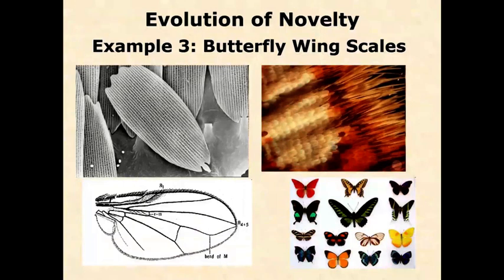Our next evolutionary novelty is going to look at butterfly wings. We've done quite a bit on arthropods. Arthropods and insects in particular are in some ways a perfect laboratory, a natural experiment for Evo Devo. There are many species, they're diverse, they have a really huge range of different new morphological features. So even though we've done insect body origins, insect wings, and now we're doing butterfly wings, we're really only scratching the surface — but these are all that we're going to do for arthropods.